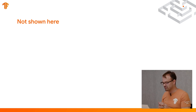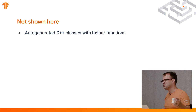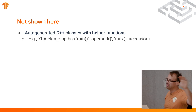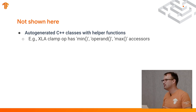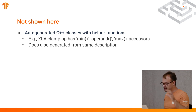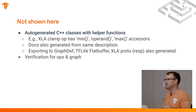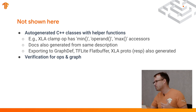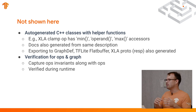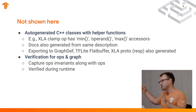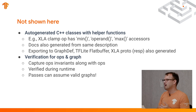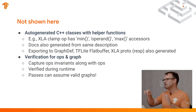What I also didn't show is how we generate C++ classes for operations with helper functions. For example, the XLA clamp op in C++ actually has accessors such as min operand and max, so you don't have to specify get_operand etc. We also generate docs from the same description. So we actually have one description format from which we generate the exporting to graph def, TF Lite flat buffer, XLA protos. All the ops defined in MLIR can specify verifications for the ops as well as structural verifications for regions and functions, which means you can capture the ops and the invariants together. You can verify graphs after every step of every transformation if you want to, to narrow down failure cases. Passes can actually assume valid graphs, so you operate on a valid graph without having to repeat the same defensive pattern everywhere.